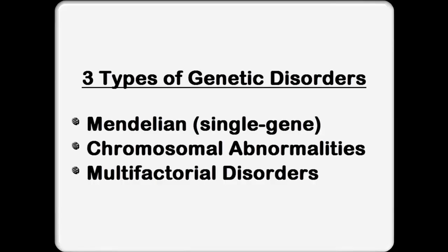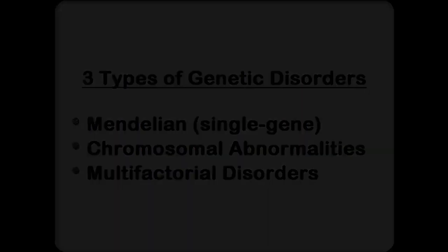There are three main types of genetic disorders: Mendelian or single gene disorders, chromosome abnormalities, and multifactorial disorders. I'm going to go over each of these in a little more depth, although I'm trying to keep it short. If there's anything else you'd like to know about these, please let me know.